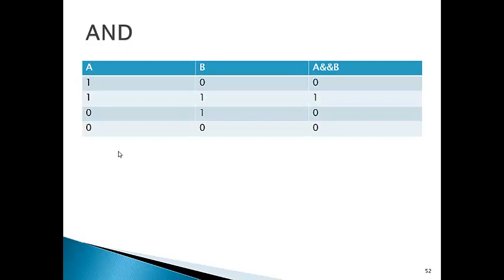So we are seeing that in the AND gate, both conditions must be true to get true. And for the OR gate: if one condition is true, the result is true. When both are false, the OR result is false.